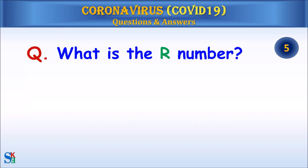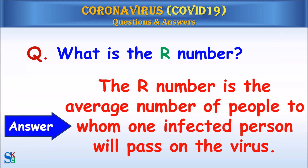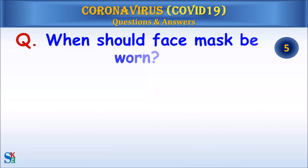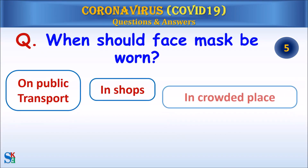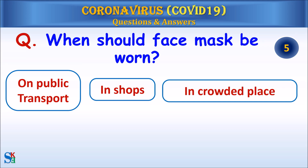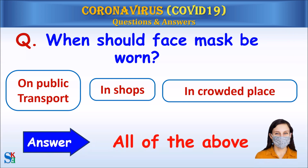Question: What is the R number? Answer: The R number is the average number of people to whom one infected person will pass on the virus. Question: When should a face mask be worn — on public transport, in shops, or in a crowded place? Answer: All of the above.